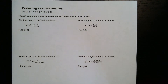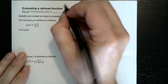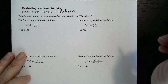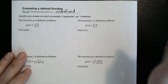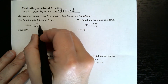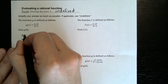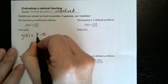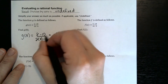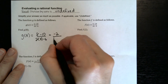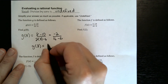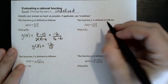Now we're going to look at some rational functions. Remember that division by zero is undefined — if we get zero in the denominator we say the value is undefined. For this function x minus 10 over 2x minus 6, g of 8 equals 8 minus 10 divided by 2 times 8 minus 6. The top becomes negative 2, the bottom becomes 16 minus 6 which is 10. So g of 8 equals negative 2 over 10.